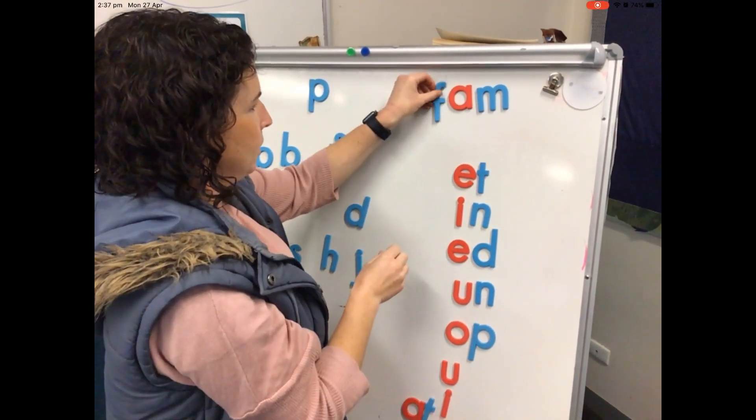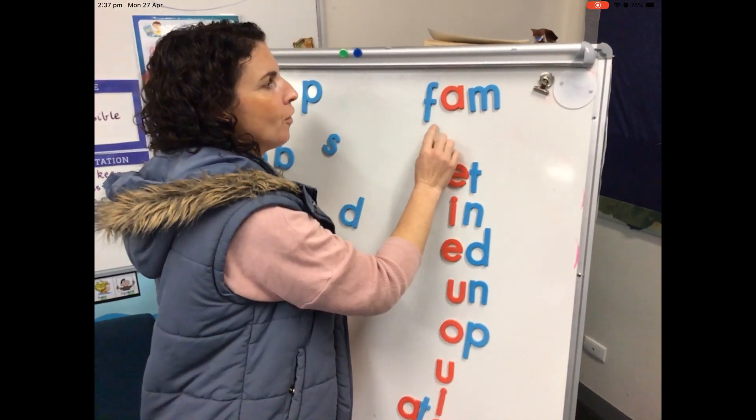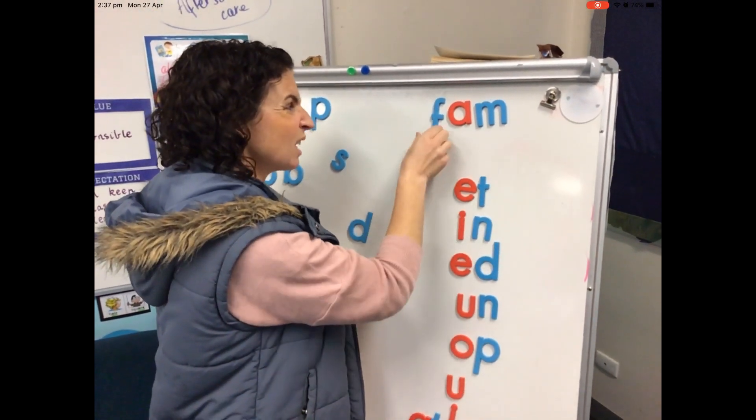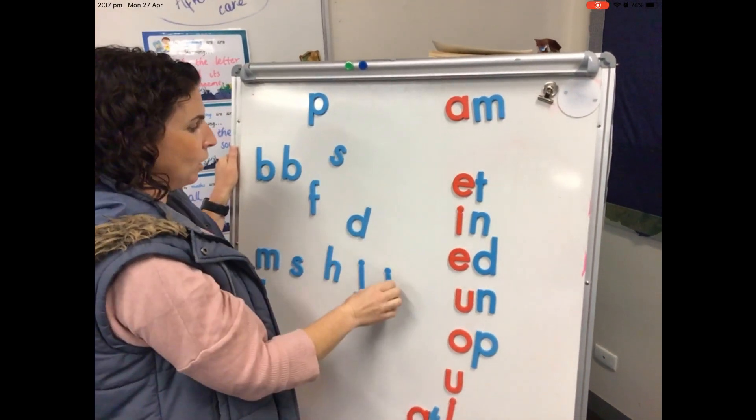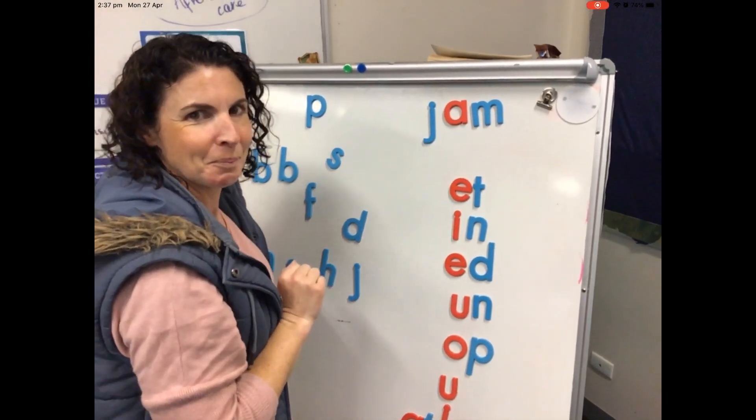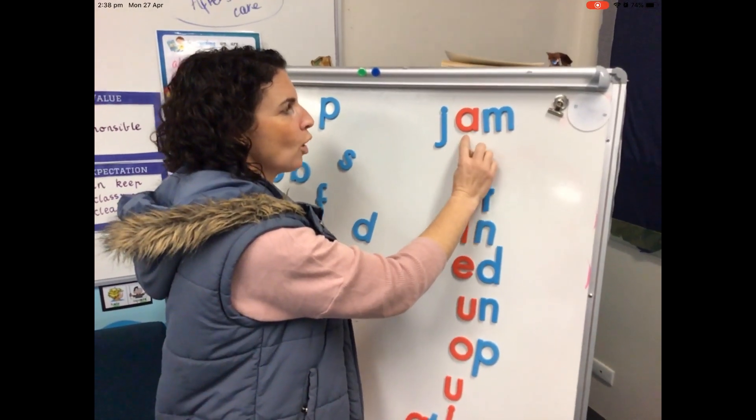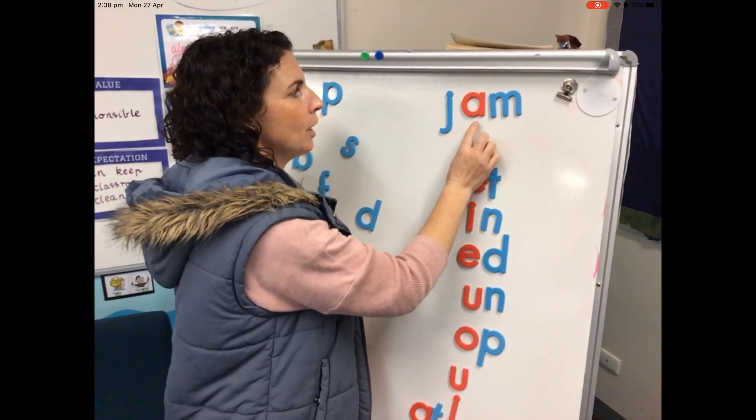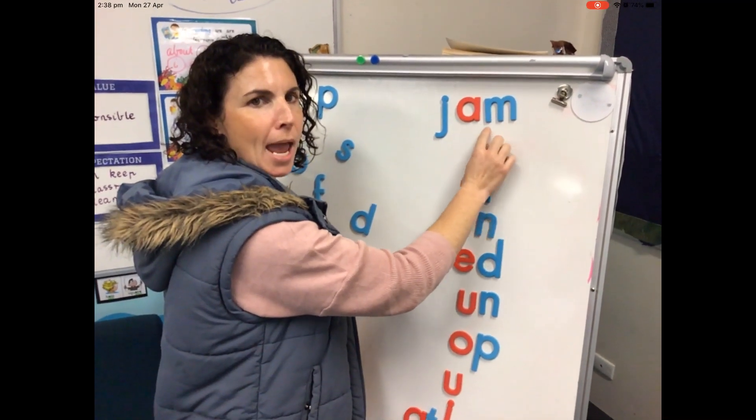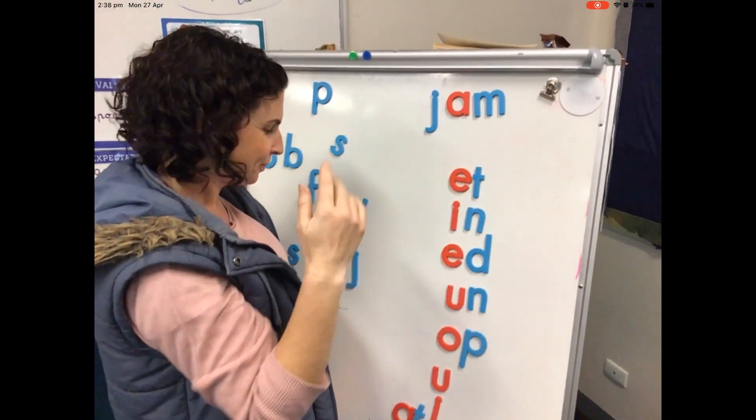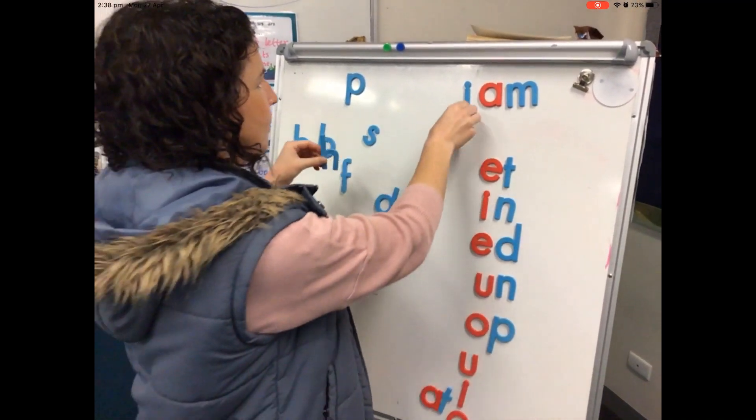So I've got S-A-M. Sam. Now I could even try this. F-A-M. Fam. Oh, it's like short for family. Not really a word, but I'm having a really good time. I was thinking, oh, I wanted to see what the J would make, Mrs. Mac. Oh, let's try it. So remember we've got AM here. J-A-M. Jam. Jam. That was on our J page, wasn't it? Mmm, oh, that's good.